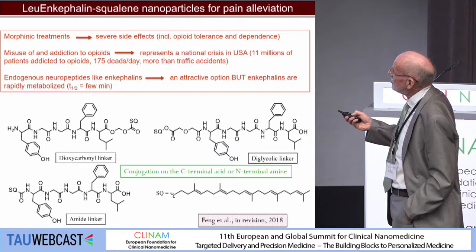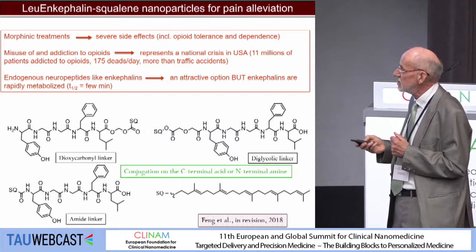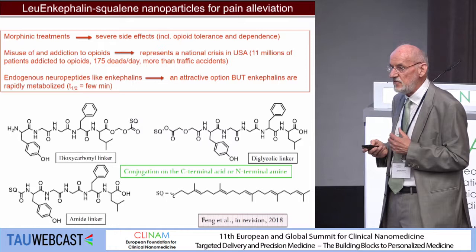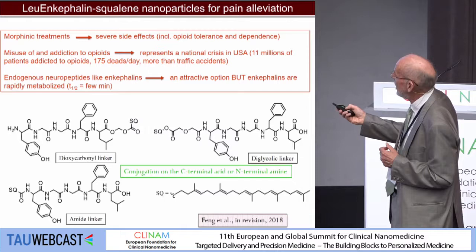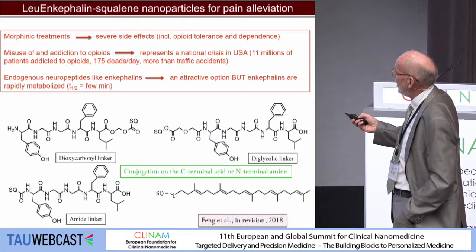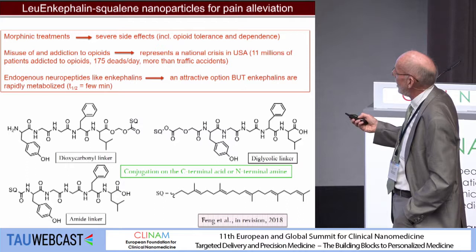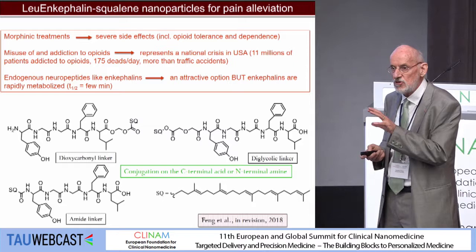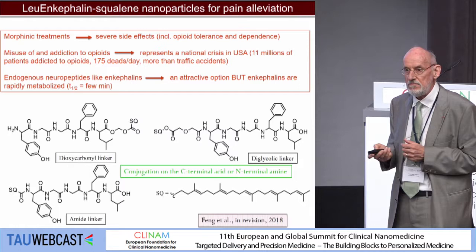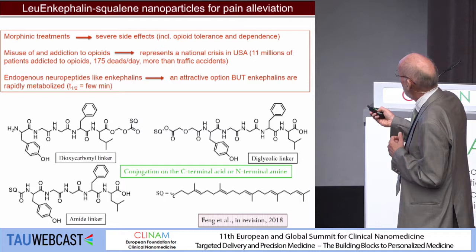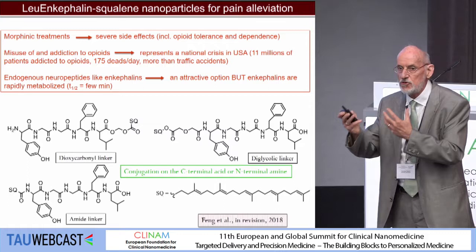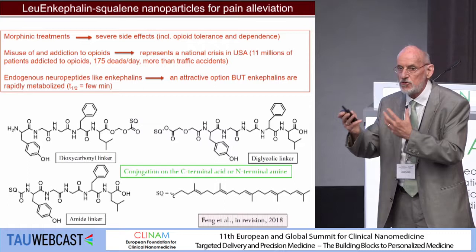The enkephalins, which are endogenous neuropeptides not passing through the blood-brain barrier, are a very attractive option that doesn't result in addiction or tolerance. But enkephalins are very rapidly metabolized after intravenous administration — the half-life is only a few minutes. So the idea was to link squalene with leu-enkephalin and make a small library of leu-enkephalin squalene bioconjugates. The conjugation can be performed either at the C-terminal moiety or the N-terminal amine of the peptides using a deoxycarbonyl linker, a diglycolic linker, or an amide linker, allowing control of the speed of drug release.